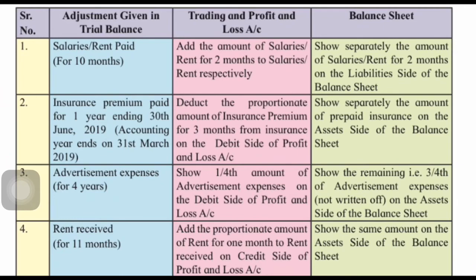Next: advertisement expenses given for 4 years. In a year there are 12 months, so you should record expenses only for 1 year. If advertisement expenses are shown for 4 years, that is not correct — it should be only for 1 year. So divide the amount by 4 to get the expense for 1 year — that comes in the outer column. The 3 years' advertisement expense is your prepaid advertisement. Deduct that amount from the profit and loss account, and show prepaid advertisement on the balance sheet asset side.